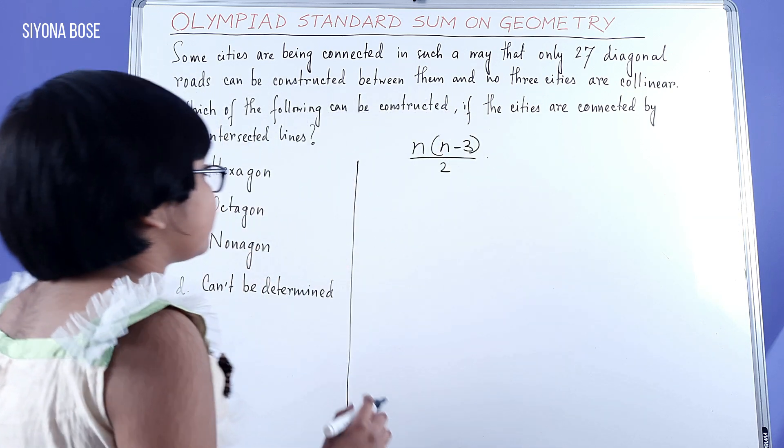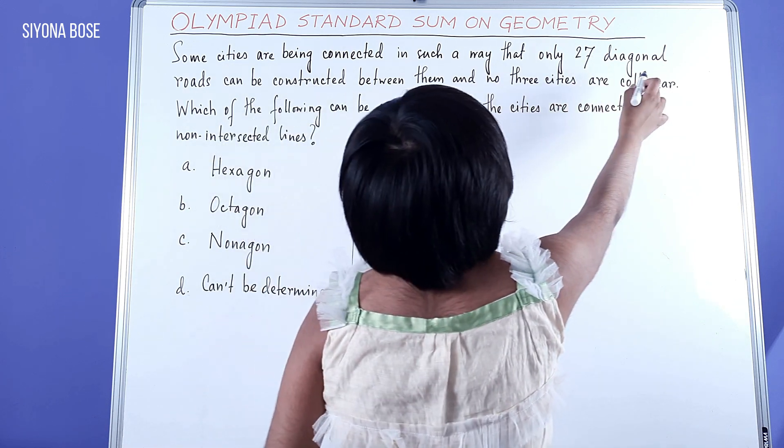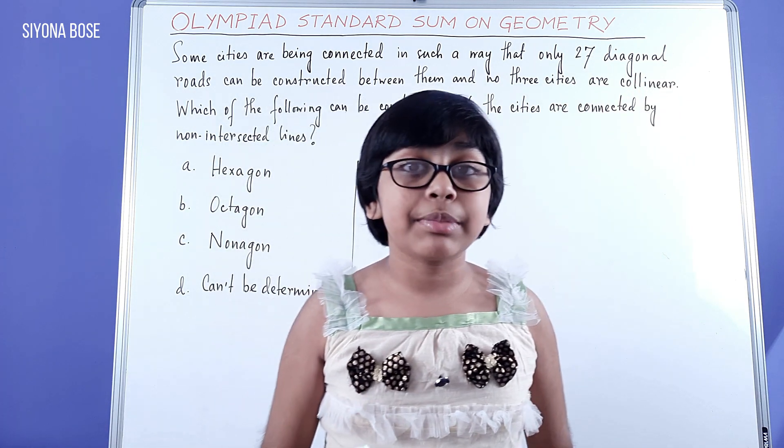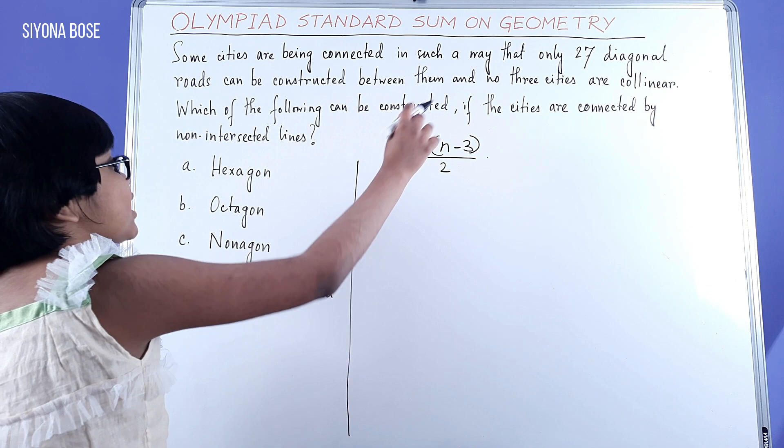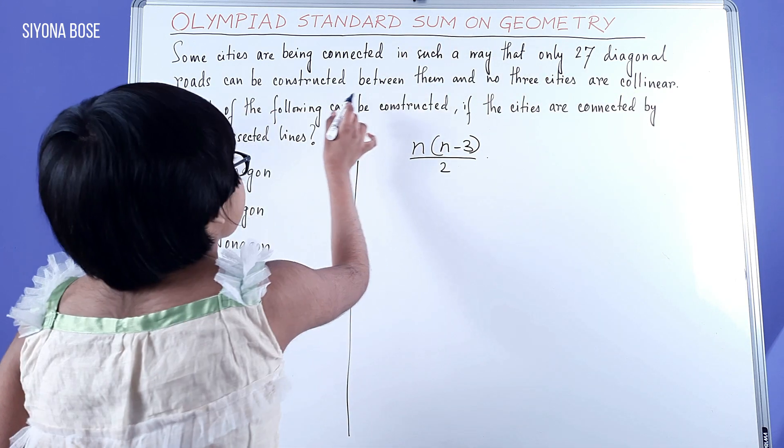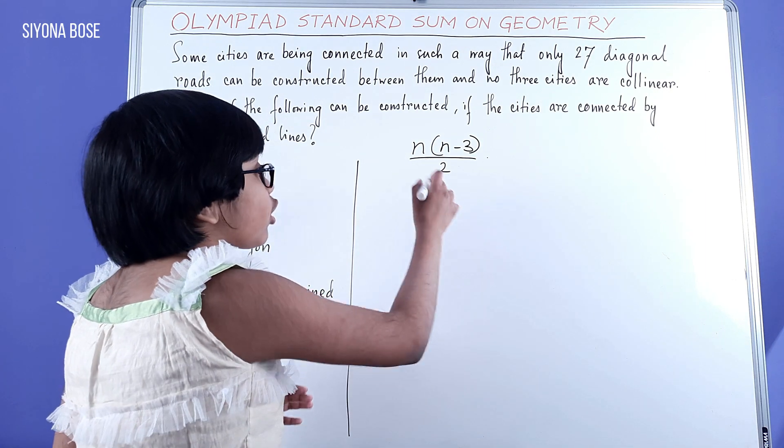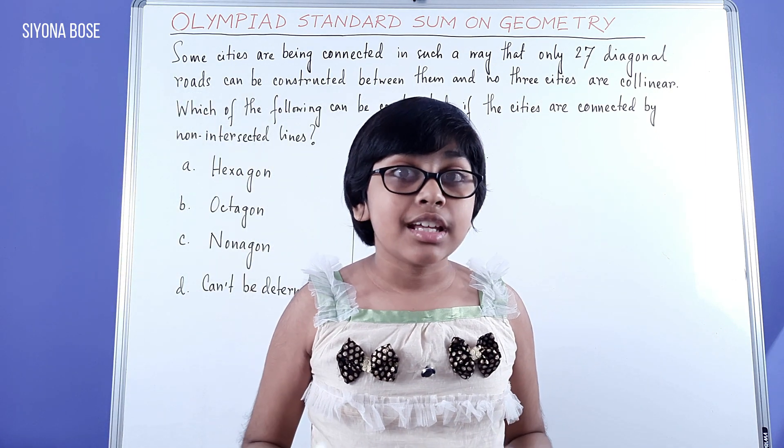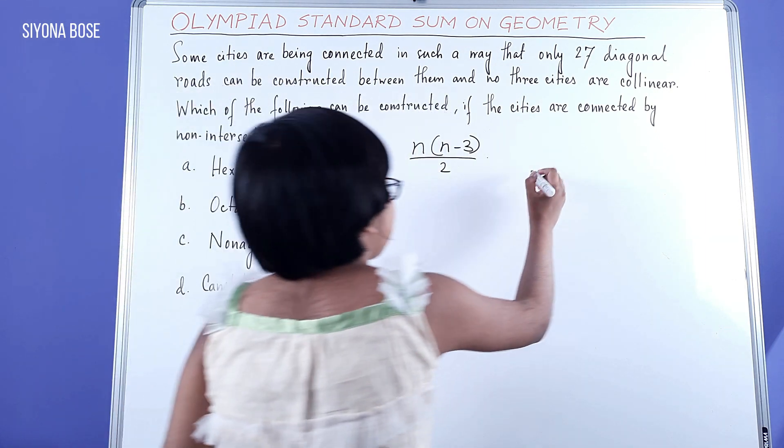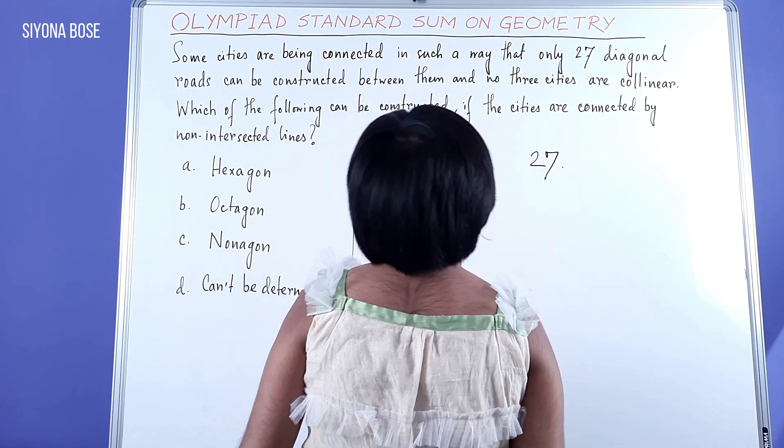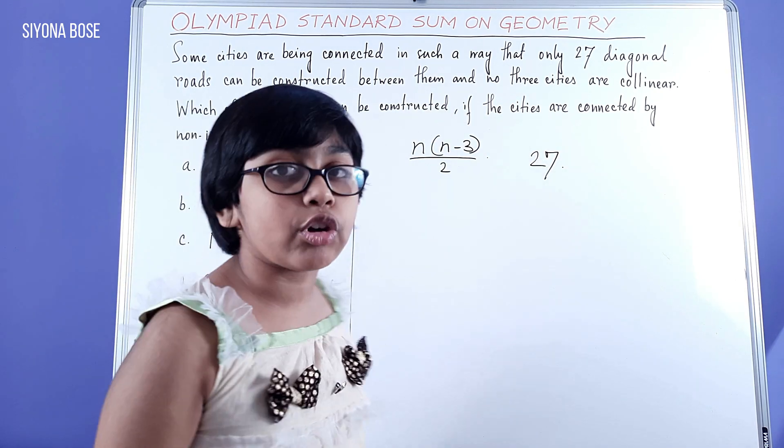So because of that, and also we have information that they can construct 27 diagonal roads between them, that means we can use this formula to equate it with the number of diagonals. 27 diagonals we have, and also we have got this formula.